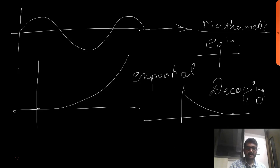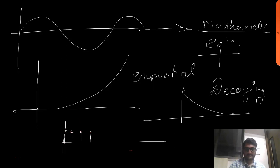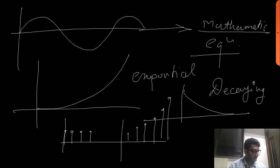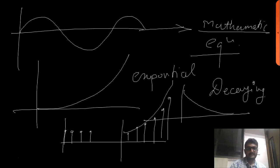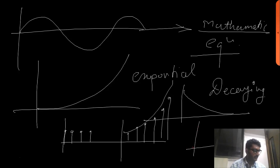We can determine the path a deterministic signal is going to follow. You might have seen the ramp signal — we know the pattern. You might have seen the exponential signal, which is increasing like this. The pattern of all these signals is known, and if their behavior is known, they are deterministic. An exponential signal is going to follow a known path, and therefore it is a deterministic signal.